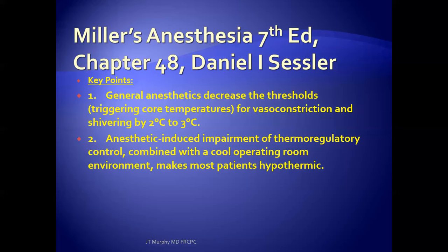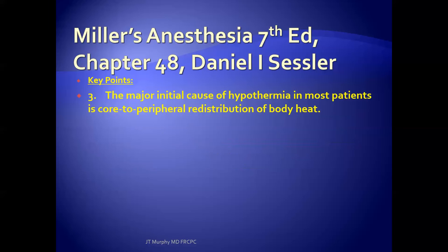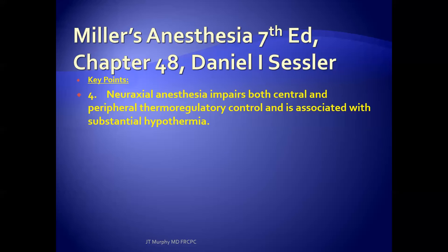Number two: anesthetic-induced impairment of thermoregulatory control combined with a cool operating room environment makes most people hypothermic. Number three: the major initial cause of hypothermia in most patients is core-to-peripheral redistribution of body heat. Number four: not only does general anesthesia impair thermoregulation, but so does neuraxial anesthesia, and it is associated with substantial hypothermia as well.